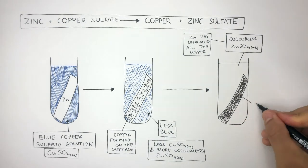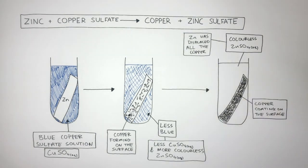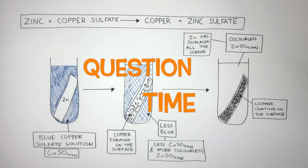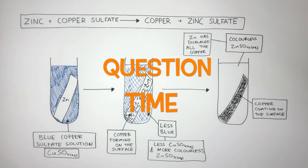There is now a copper coating on the surface of the zinc, as the zinc has displaced the copper from the copper sulfate, causing the copper to now be a coating on the surface of the zinc. It's question time. Attempt these questions to check your understanding.